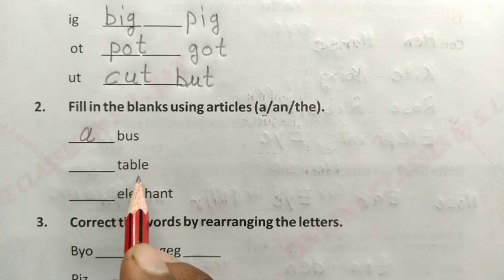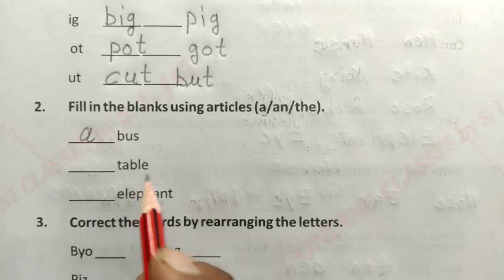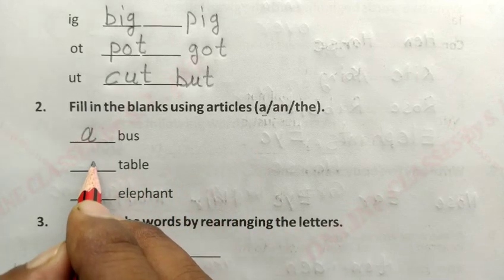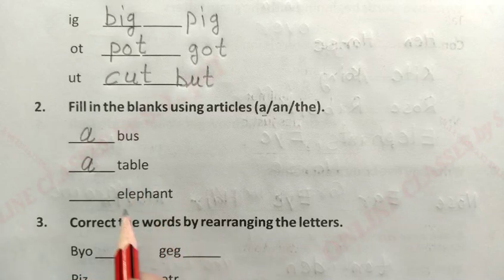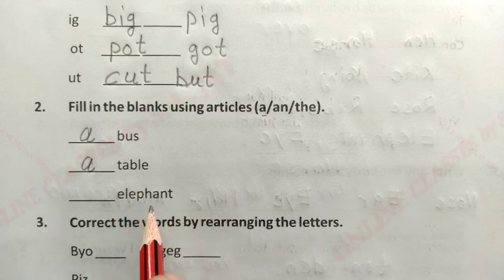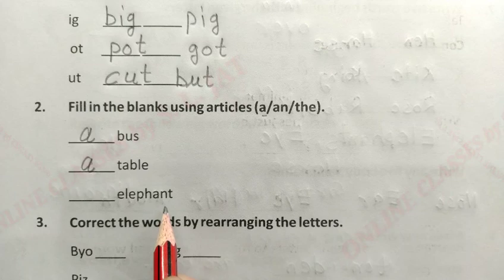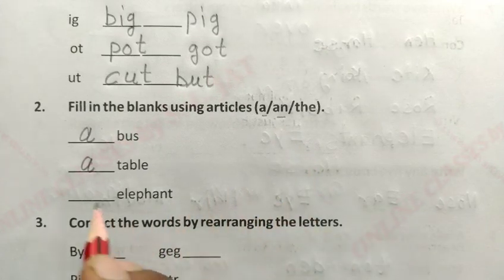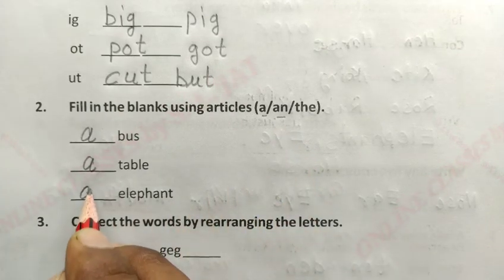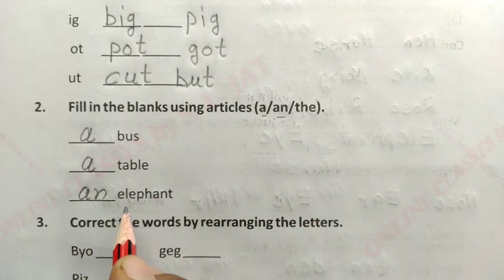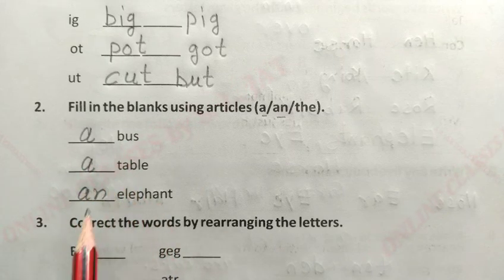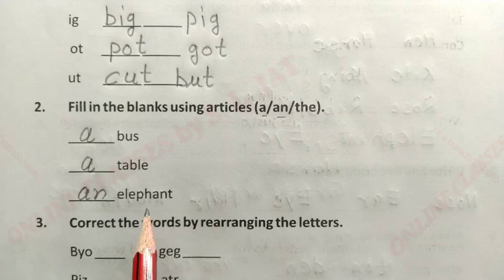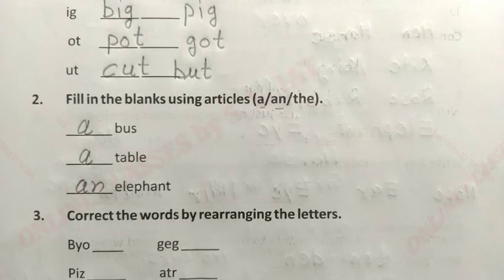अगला है T-A-B-L-E = table, तो यहाँ आएगा 'A table'. अगला है E-L-E-P-H-A-N-T = elephant, तो यहाँ आएगा 'AN elephant'. तो: A bus, A table, AN elephant.